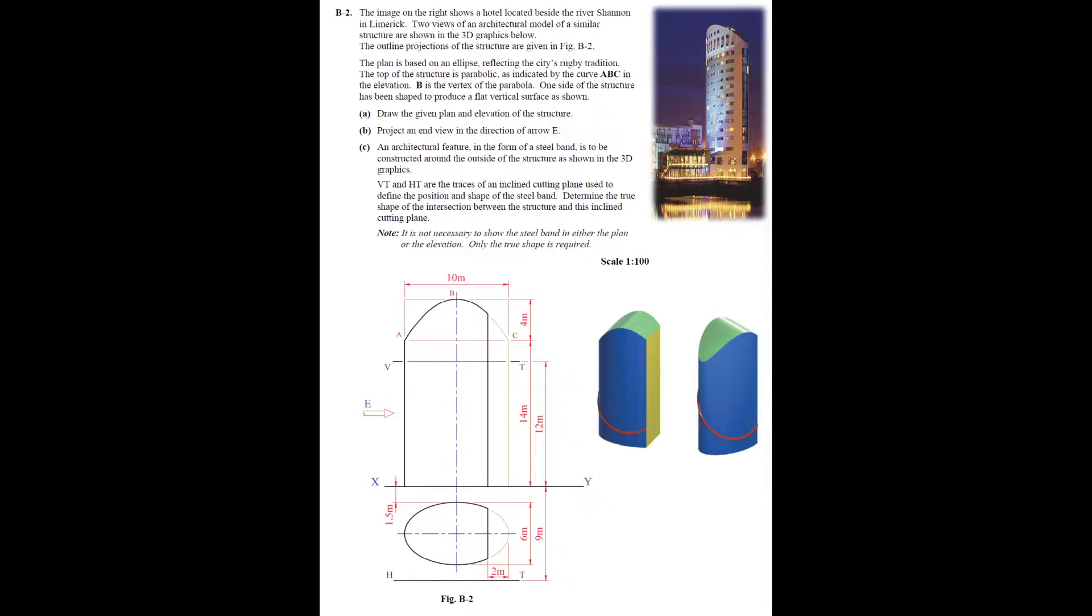Note it's not necessary to show the steel band in either the plan or the elevation, only the true shape is required. The scale is 1 is to 100. This is quite a wordy question, as all conic questions tend to be, but what it's asking is quite straightforward. You're asked to draw an elevation, plan, and end view, and then you're asked to draw the true shape of the solid after it's been cut by the traces VT and HT.